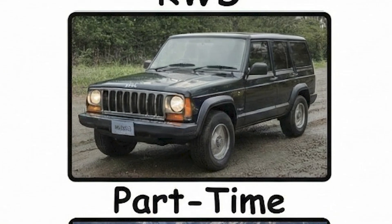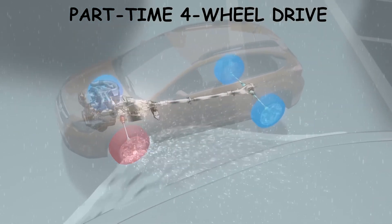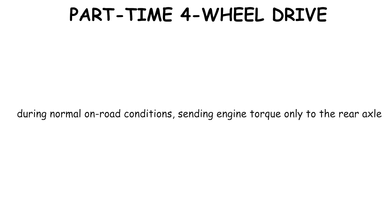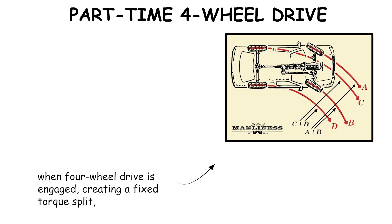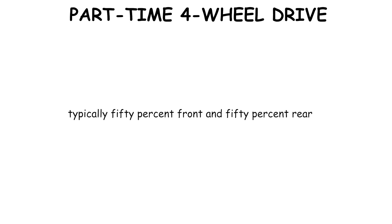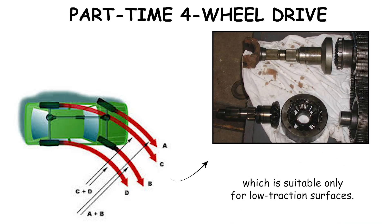Part-Time Four Wheel Drive is a drivetrain configuration where the vehicle operates primarily in rear-wheel drive during normal on-road conditions, sending engine torque only to the rear axle. A manually selectable transfer case mechanically locks the front and rear drive shafts together when four-wheel drive is engaged, creating a fixed torque split, typically 50% front and 50% rear. Because there is no center differential, front and rear axles must rotate at the same average speed, which is suitable only for low-traction surfaces.